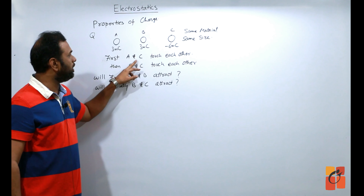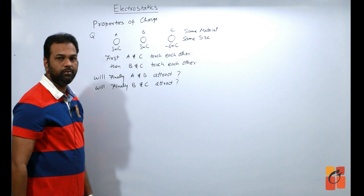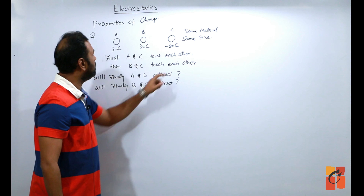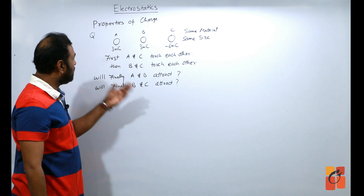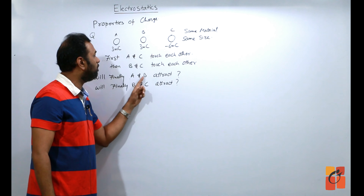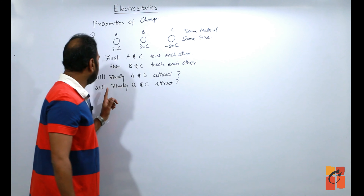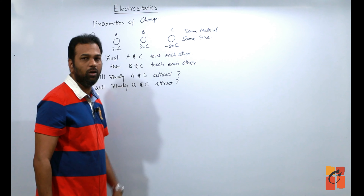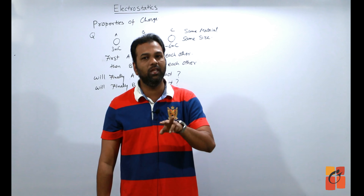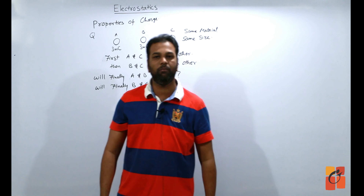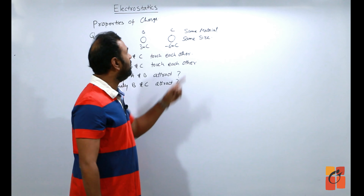Third property: charge is a scalar quantity। Charge kaisi quantity hai? Yeh scalar quantity hai। Simple addition aur subtraction hoti hai, jaise 3 coulomb + (−2 coulomb) = 1 coulomb। इसमें कोई vector जैसी direction नहीं होती — it is a simple scalar quantity।